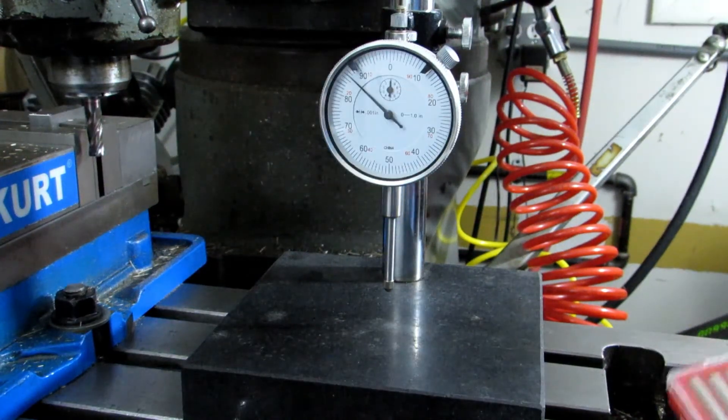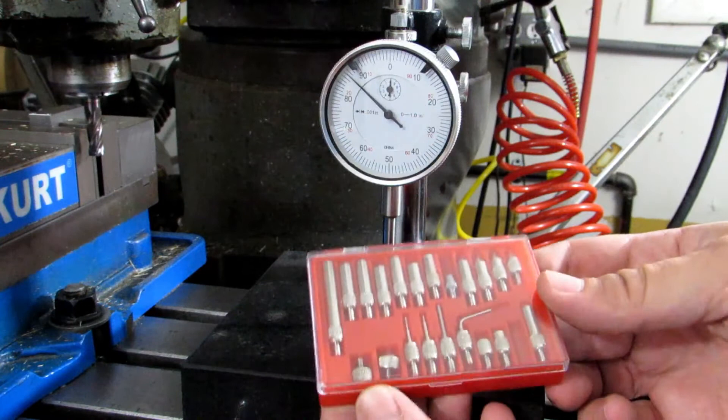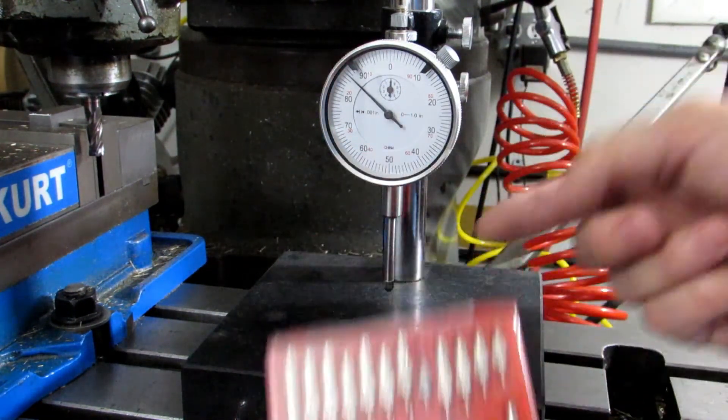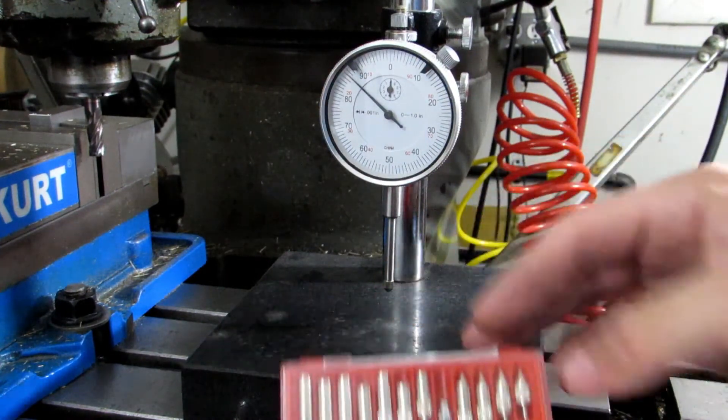Another neat way of using these is they've got these indicator tips that you can buy. They've got a variety of shapes and lengths that screw onto the end of the indicator, so you would undo that.